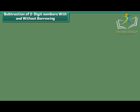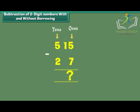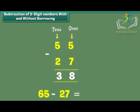Subtraction of two-digit numbers with and without borrowing. Let us now subtract two-digit numbers using the technique of borrowing. What is 65 minus 27? Since 5 is less than 7, it borrows 1 from the number at the 10s place to make itself 15, which is larger than 7. 15 minus 7 is equal to 8. Since the 6 at the 10s place lent 1 to the 5 at the 1s place, it becomes 5. 5 minus 2 is equal to 3. Therefore, 65 minus 27 is equal to 38.